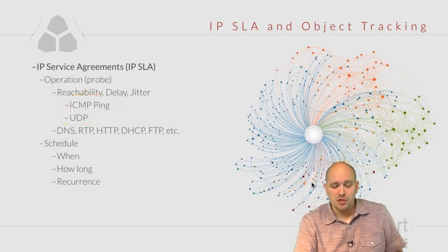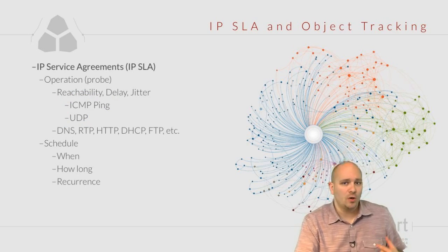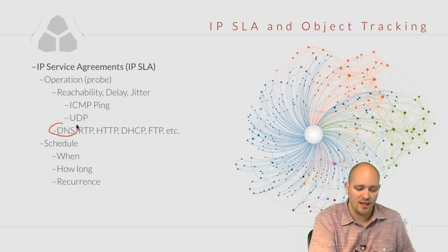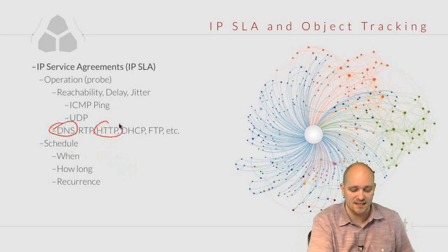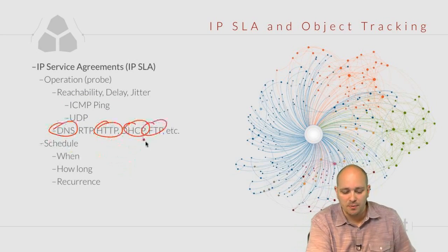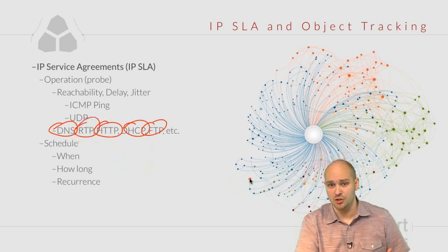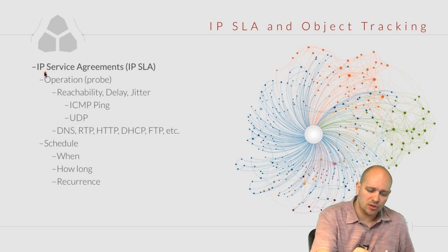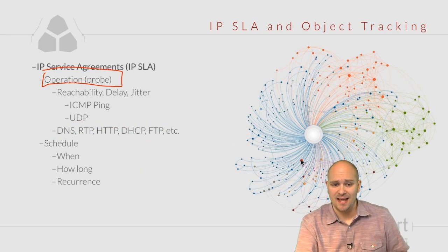On top of that we can measure the actual operations of some network services — not only can we ping a host or check if the other side is responding to UDP packets, but we can actually measure application behavior like DNS, HTTP, DHCP, FTP, and we can measure the performance of voice traffic and so on. This is what IP SLA refers to as an operation, or a probe.